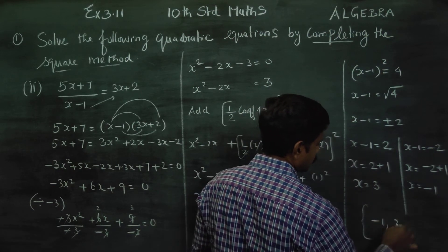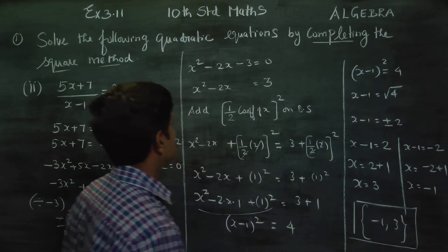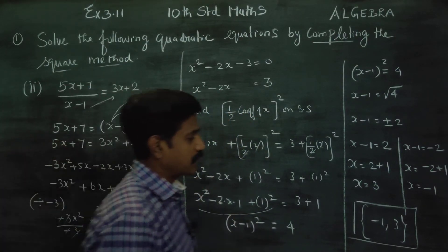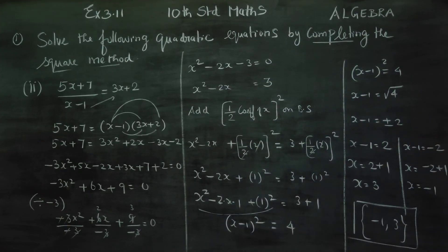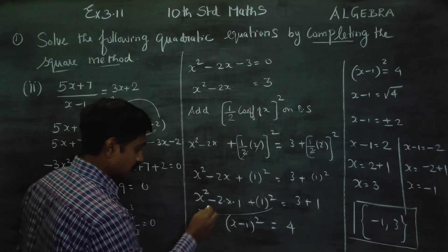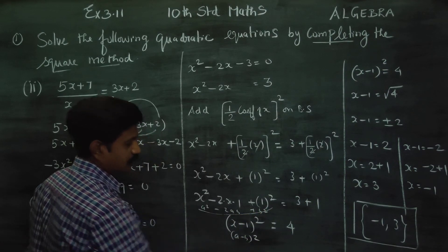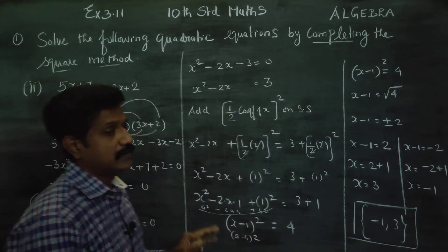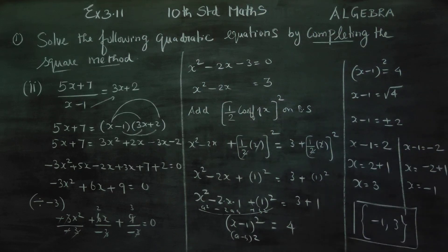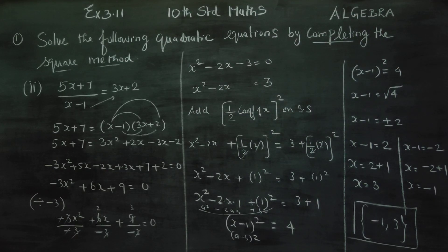Therefore, the solution set is {minus 1, 3} — that is your final answer. To recap: in the completing square method, we use (a minus b) whole square equals a squared minus 2ab plus b squared. This is the completing square method. Thank you.